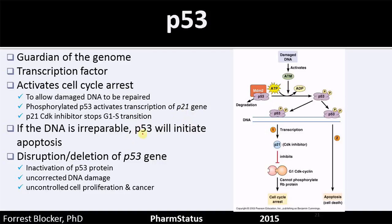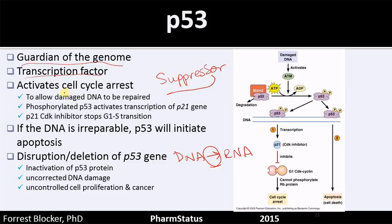P53 is another suppressor gene, sometimes called the guardian of the genome. It's a transcription factor — transcription being DNA to RNA. It activates cell cycle arrest to allow DNA to be repaired. It stops the cell cycle from progressing before the DNA can be replicated and says: wait, stop. This DNA is damaged. Don't replicate it. Fix it first. Then you can carry on.